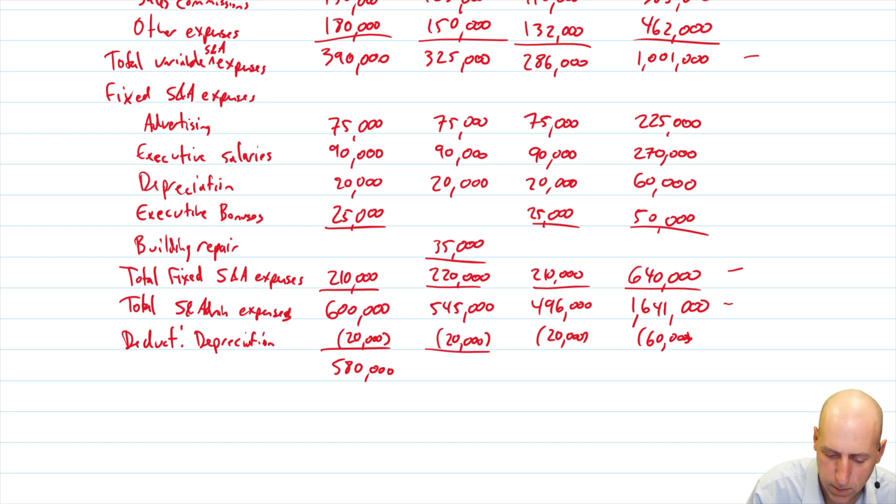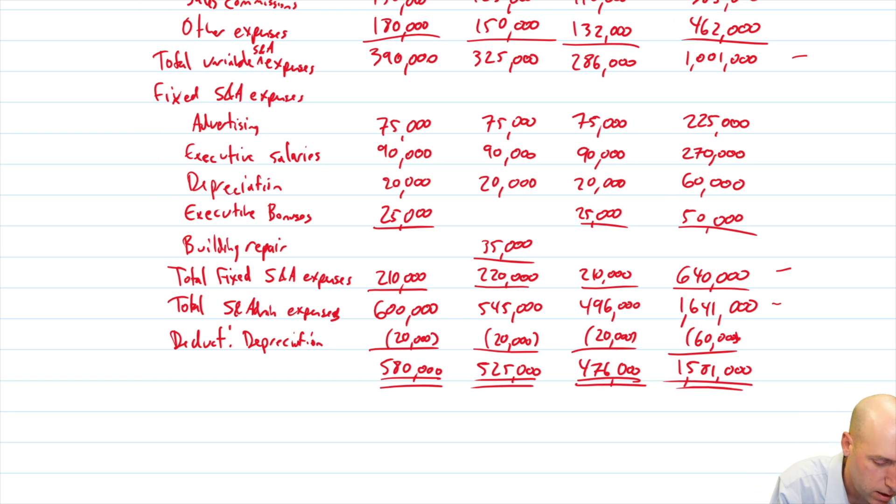545 minus 20, 525. 496 minus 20, 476. 1641 minus 60, 1581, and there we have it. Cash paid for selling and admin expenses. Dollar signs here because these are all bottom lines.